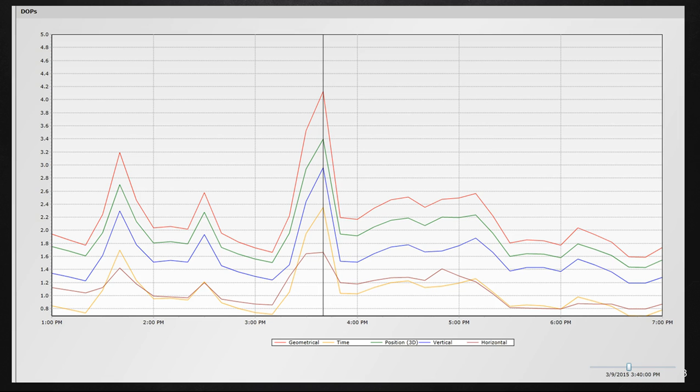Here is just a quick screenshot of DOPs from the Trimble mission planning software that we'll look at later on. There's the geometrical, which is in red. There's the yellow in time, and so forth. This just so happens to be on a date I collected a while back, 3-9-2015.